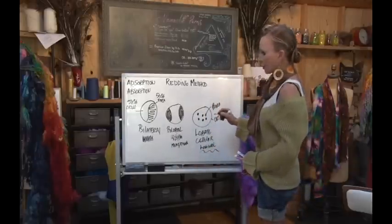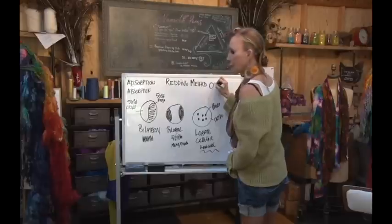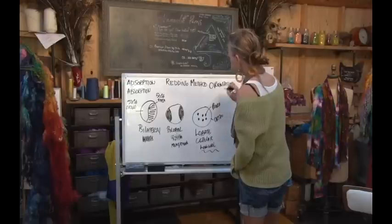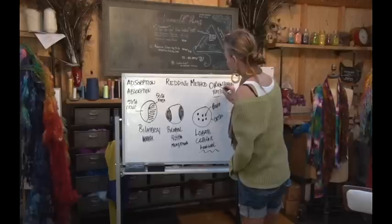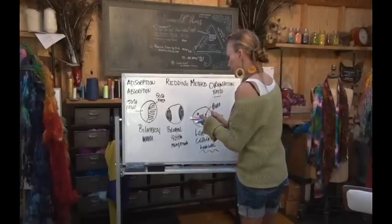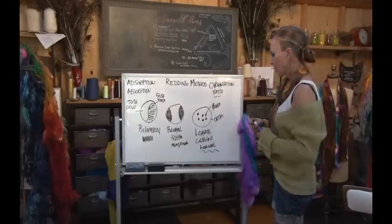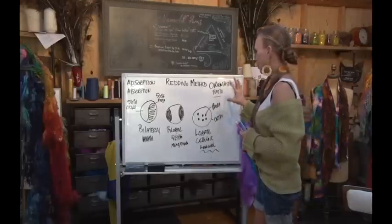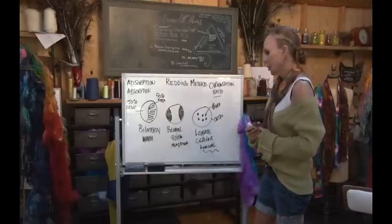So when we're talking about crimp, we're talking about the para and the ortho, but the orientation and the ratio of para to ortho cortex. So the cortex is largely how we determine how fiber is going to take dye. And not only that, the orientation and the ratio has to do with the type of crimp that we have on the particular wool that we're looking at.